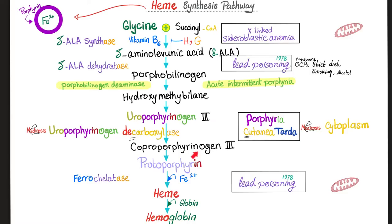Let's synthesize the rim — protoporphyrin. What are the raw materials? You need glycine amino acid, you need succinyl-CoA, and you need vitamin B6 as a coenzyme — a coenzyme to the enzyme delta-ALA synthase, which synthesizes delta-ALA, also known as aminolevulinic acid. Then, by delta-ALA dehydratase, it becomes porphobilinogen. If it has the word 'bili' in it, you know it's going to be related to the liver — keep that in mind because of the association between liver disease and porphyrias.